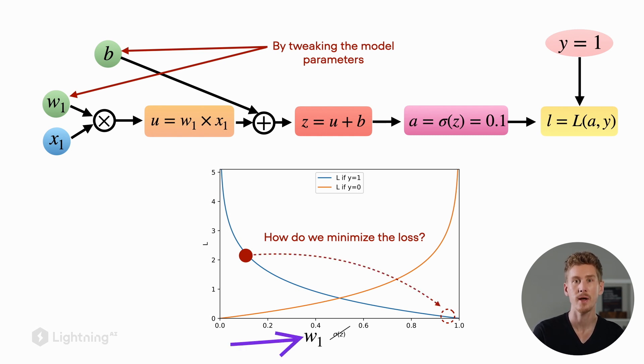Let's take a look at this loss function as a function of this model parameter. The activation value is computed from the net input, and the net input itself consists of x1, b, and w1.